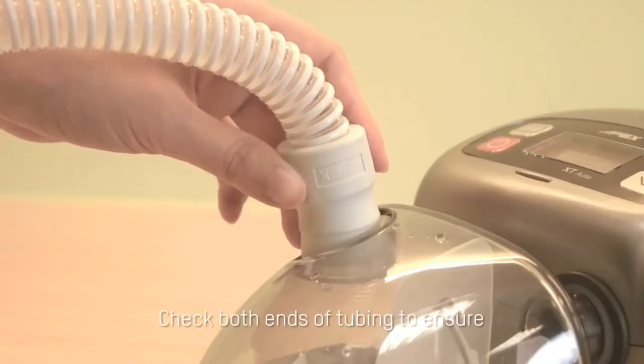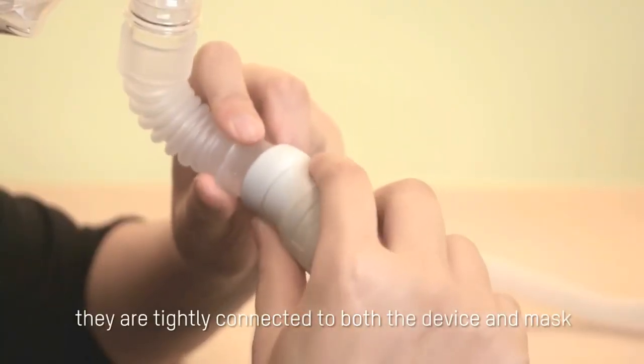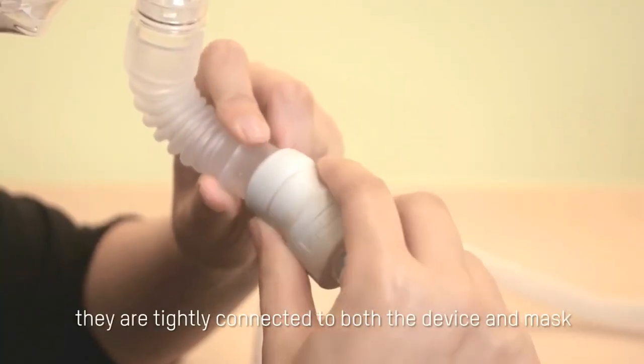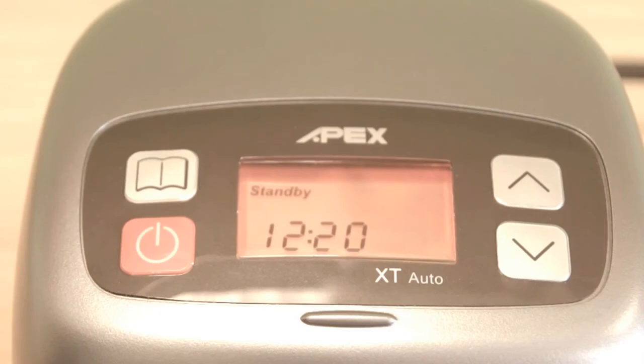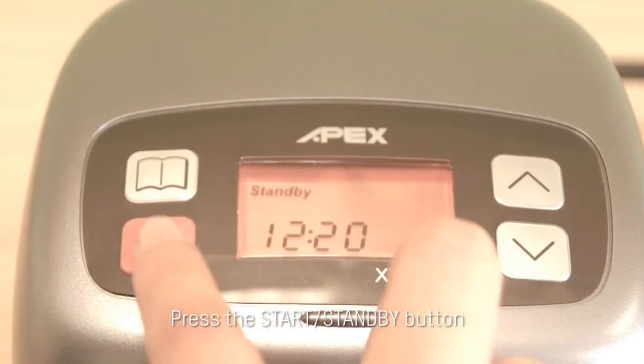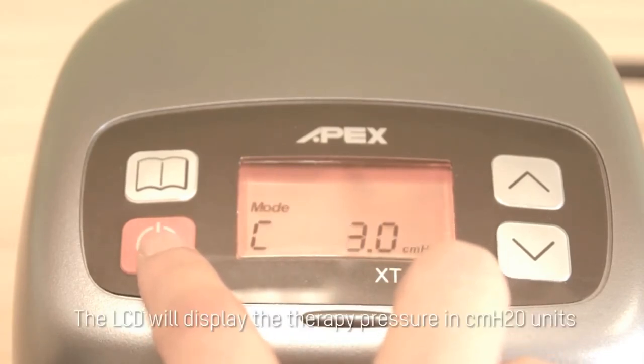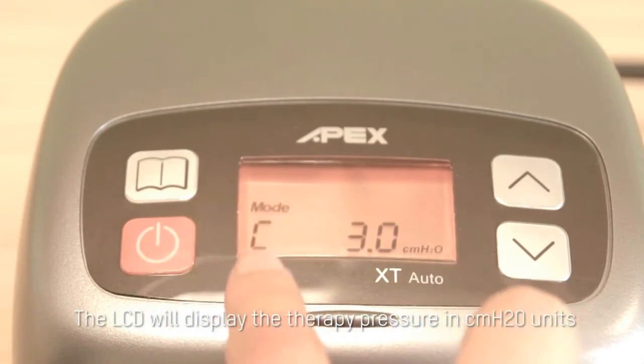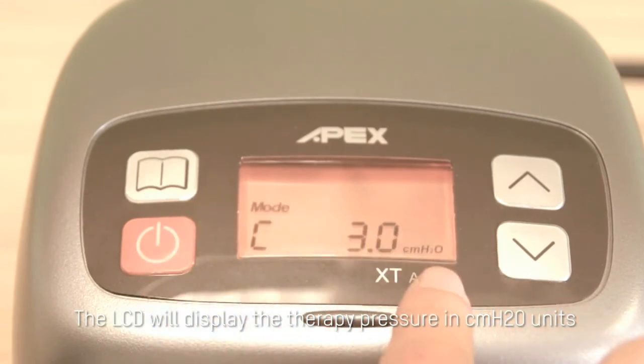Check both ends of tubing to ensure they are tightly connected to both the device and mask. Press the start standby button. The LCD will display the therapy pressure in CMH2O units.